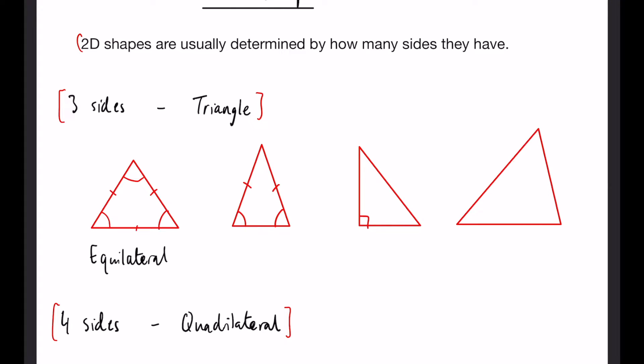Next you'll notice on this triangle both of these angles are the same and the other two sides are also the same. This is called an isosceles triangle.